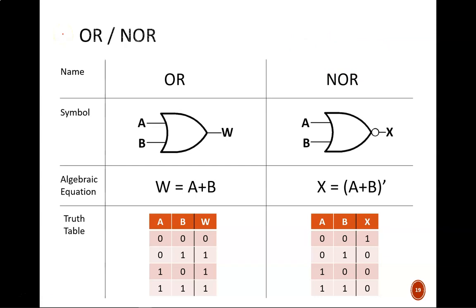Those same patterns are seen here when comparing OR and NOR. As you know, OR logic outputs true if at least one input is true. The gate symbol for OR looks like a sideways shield. The algebraic operator is a plus sign.